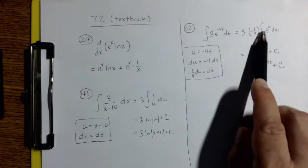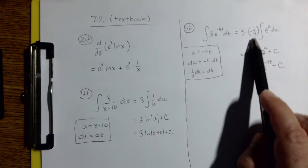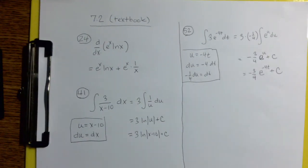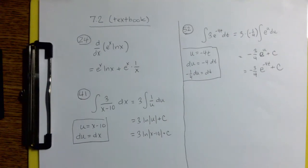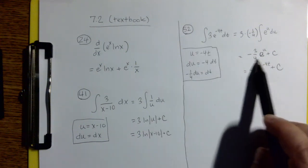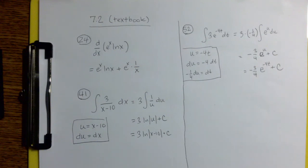And eventually we get down to this negative 1 4th du equals dt. So when we convert everything over to u, we do get that factor of negative 1 4th that we need to keep there. And we also have that factor of 3 that we started with. And so our antiderivative looks like negative 3 4ths e to the u plus c.